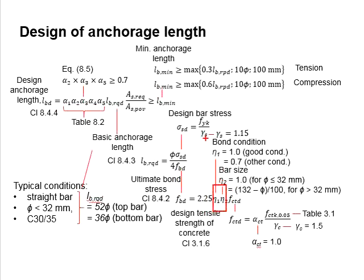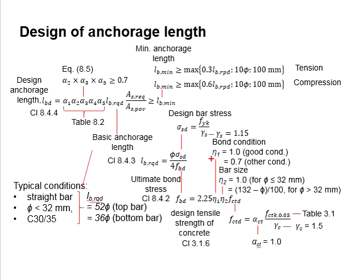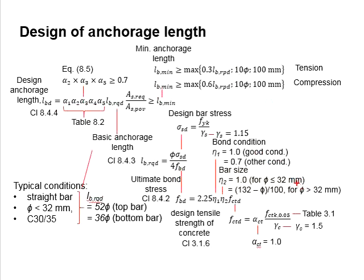Two factors affect the ultimate bond stress: eta1 and eta2. Eta1 represents the effect of bond conditions: under good bond conditions eta1 equals 1.0, and under poor bond conditions eta1 equals 0.7. Eta2 represents the effect of bar size: eta2 equals 1.0 when the bar diameter is less than or equal to 32 mm, and for bars greater than 32 mm, a separate equation is used to determine eta2.